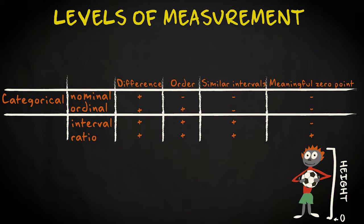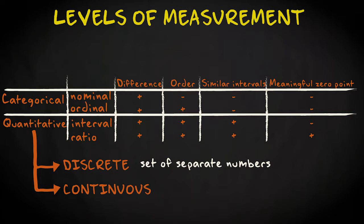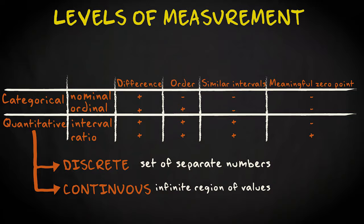Interval and ratio variables are what we call quantitative variables, because the categories are represented by numerical values. Quantitative variables can also be distinguished in discrete and continuous variables. A variable is discrete if its possible categories form a set of separate numbers. For instance, the number of goals scored by a football player. A player can score, for instance, one goal or two goals, but not 1.21 goals. A variable is continuous if the possible values of the variable form an interval. An example is, again, the height of a player. Someone can be 170 centimeters tall, 171 centimeters tall, but also, for instance, 170.2461 centimeters tall. We don't have a set of separate numbers, but an infinite region of values.